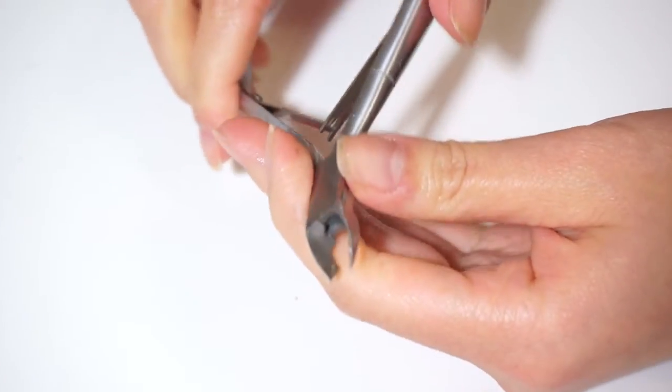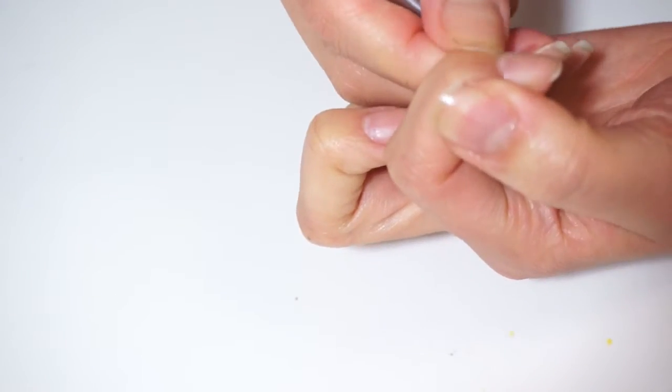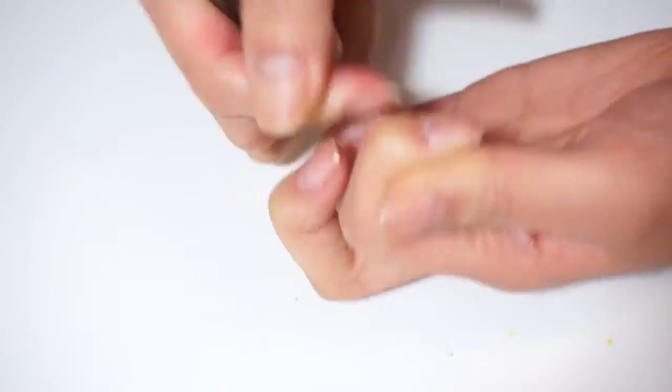This step is optional, but I'm using a cuticle nipper to remove my cuticles. But you can definitely skip this step because if you don't do it right, you can bleed.